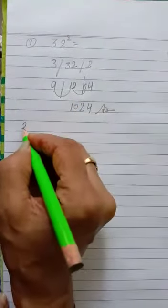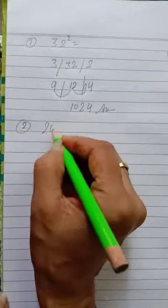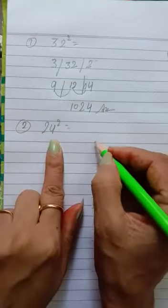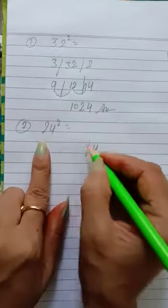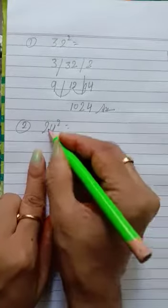Now question number 2: square of 24. Same trick. First we have to separate 4, then 24, then 2. Now we have to start.